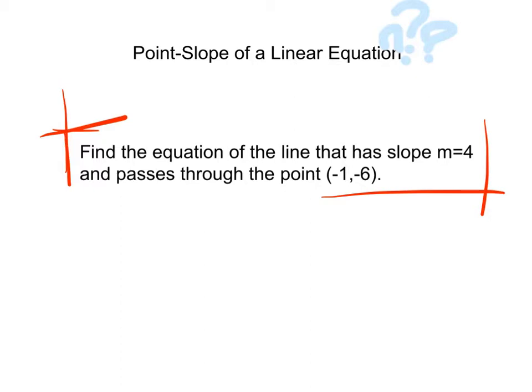Today my topic is point-slope of a linear equation. First, find the equation of the line that has slope m equals 4 and passes through the point (-1, -6).